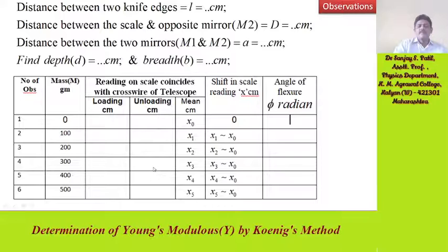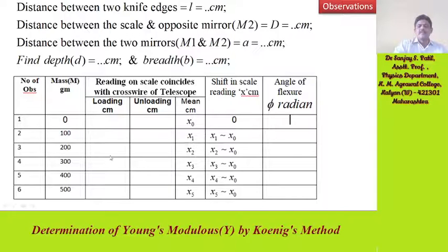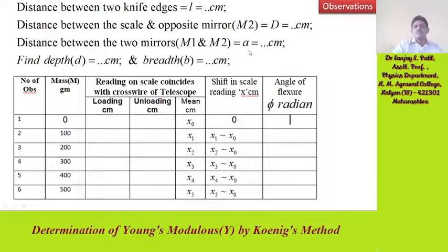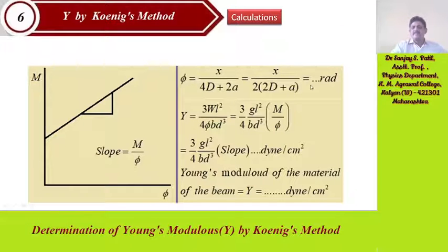Then weights are removed: remove 400 g, remove 300 g, remove 200 g, remove 100 g, and finally at 0 g. Although there should be no difference between the loading and unloading readings, we take all readings for both loading and unloading.